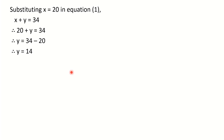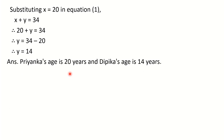Since it is a word problem, the final answer should be written as a statement. Take help of the first statement to write the final answer. X is the age of Priyanka and Y is the age of Deepika. So write: therefore Priyanka's age is 20 years and Deepika's age is 14 years. Writing this final answer is very important — it carries half a mark. Don't forget to write it. Please copy it down.